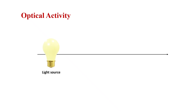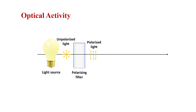The next topic is optical activity. If you pass unpolarized light through a polarizing filter, you get light propagating in a single direction — unpolarized light is converted into polarized light. Now, if you pass that polarized light through certain substances called optically active substances, there will be a rotation in the plane of propagation of light. The light will rotate through some angle theta, and this is termed optical activity.